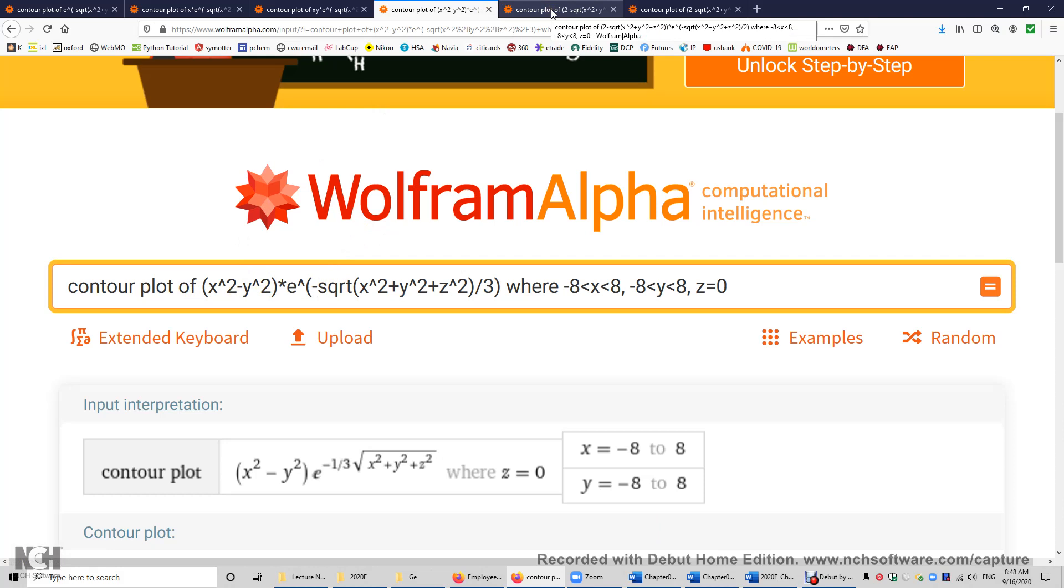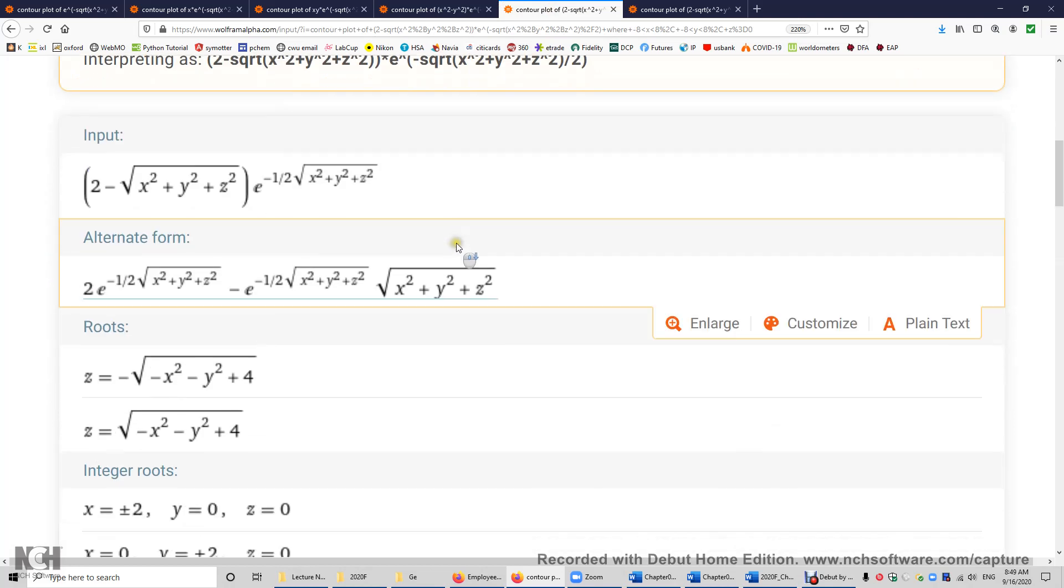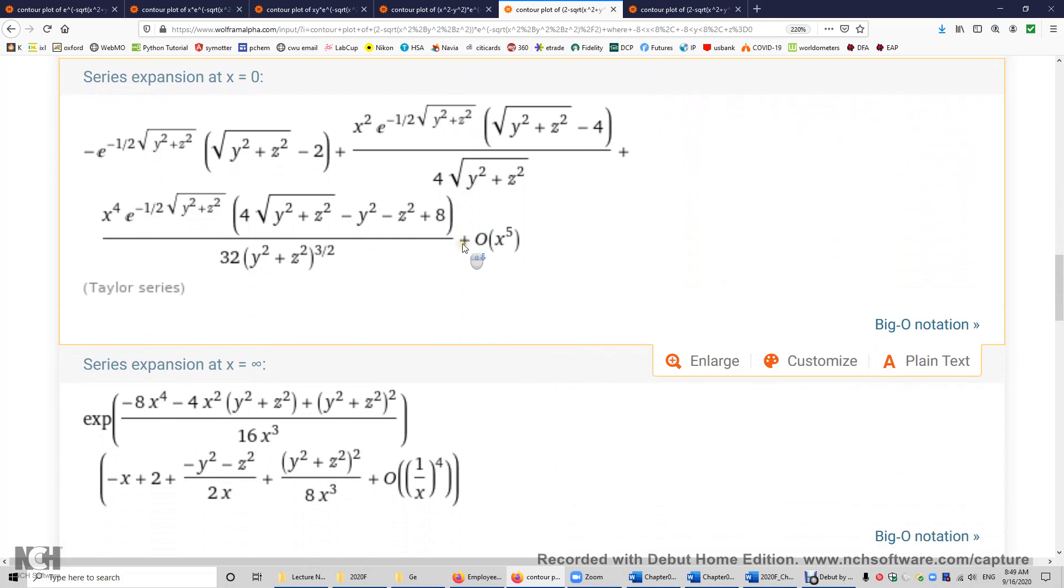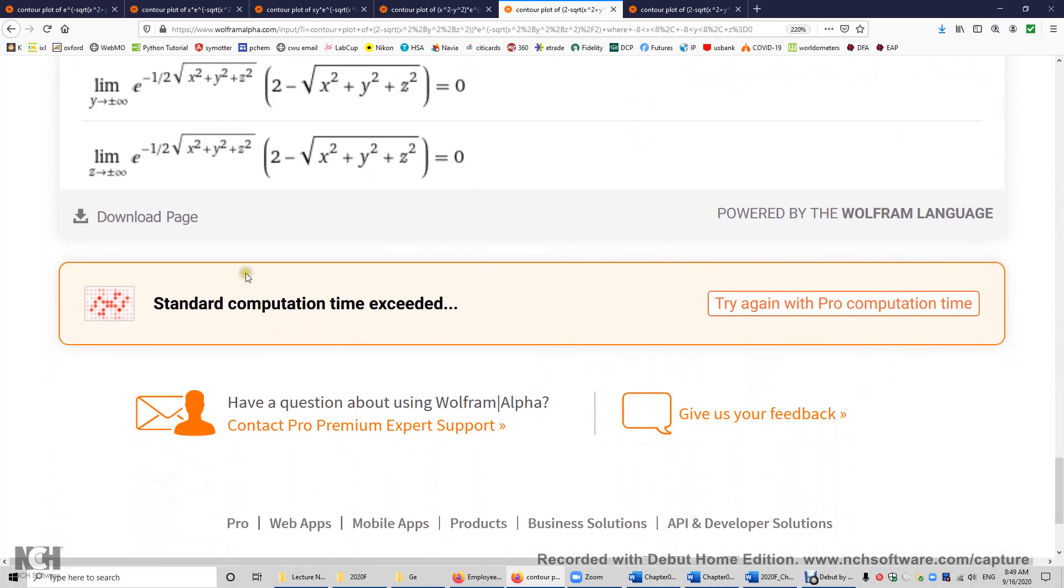I was trying to draw the 2s orbital. This is the 2s orbital, which is 2 minus r times e to the power of negative r over 2. But I'm using the free version here. So you probably can see this. Standard computation time exceeded. So I was not able to do that.